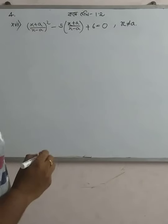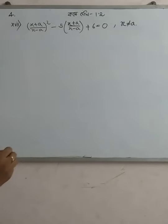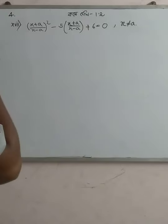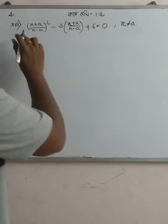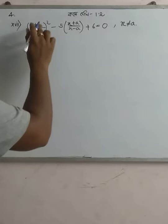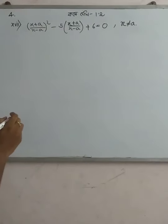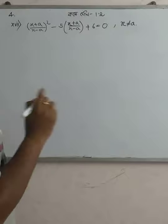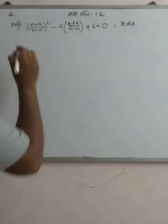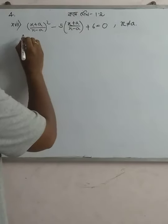We have x plus a by x minus a. So, x plus a by x minus a whole squared minus 5 into x plus a by x minus a plus 6 is equal to 0.